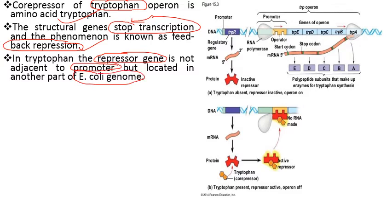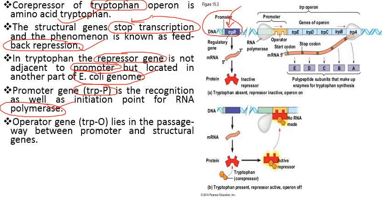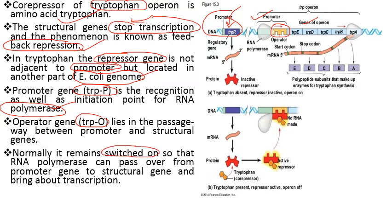The promoter gene, trpP, is the recognition as well as the initiation point for RNA polymerase. RNA polymerase comes to this promoter region, recognizes it, and then starts the transcription process. The operator gene, trpO, lies in the passageway between the promoter and the structural genes. Normally it remains switched on so that RNA polymerase can pass from the promoter to the structural genes and bring about transcription, synthesizing the mRNA that finally produces the enzymes required for tryptophan synthesis.